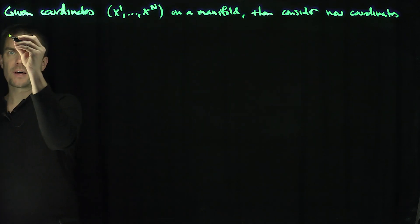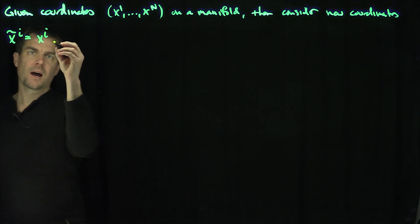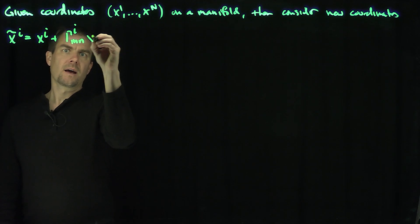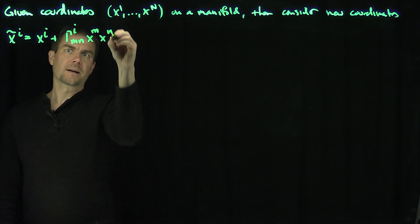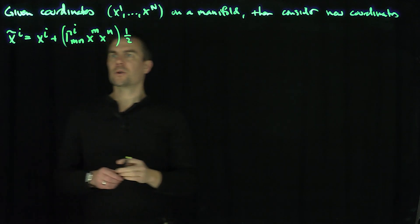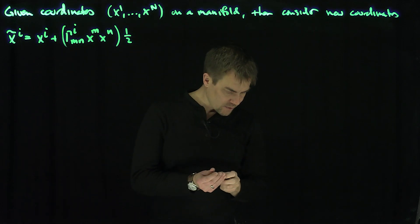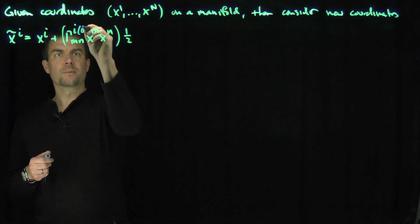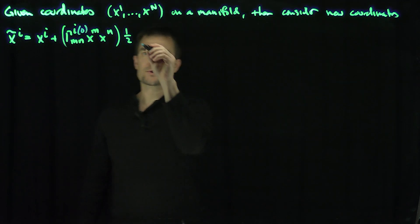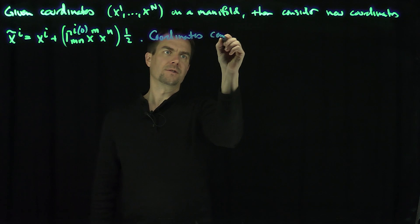Here's how to define these new coordinates. I'm going to say that x_i tilde is x_i plus one-half times gamma_imn times x_m x_n. And what I'm going to do is evaluate this Christoffel symbol at the origin, the point zero. So our coordinates are centered at zero.